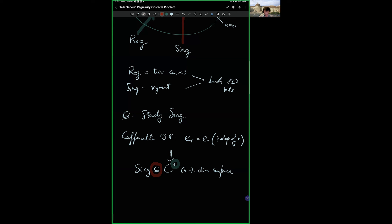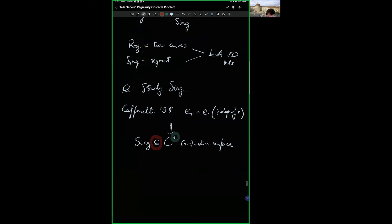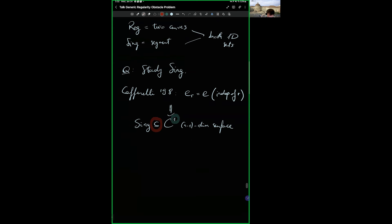As a consequence of e_r being independent of r, Caffarelli proved in 1998 that the singular set is contained in a C^1, (n-1)-dimensional surface. There are two points to analyze: the containment, and the C^1 regularity. The containment is optimal — one can construct a solution where the singular set is the Cantor one-third set, which is contained in a C-infinity curve but is itself not a manifold.